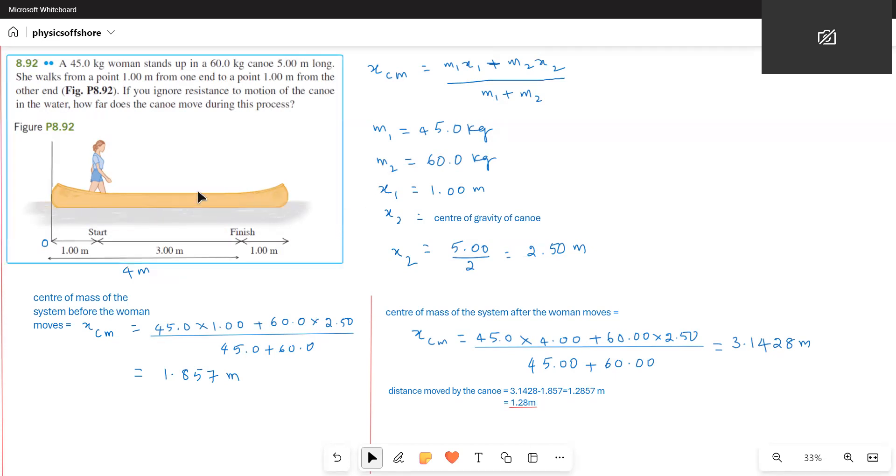Now, we have to calculate the center of mass of the system. The center of mass along the x-axis is m1x1 plus m2x2 divided by m1 plus m2. This is a two-body system. m1 is the mass of the woman and m2 is the mass of the canoe. x1 is the distance of the woman from the arbitrary origin and x2 is the distance of the center of gravity of the canoe from the arbitrary axis.